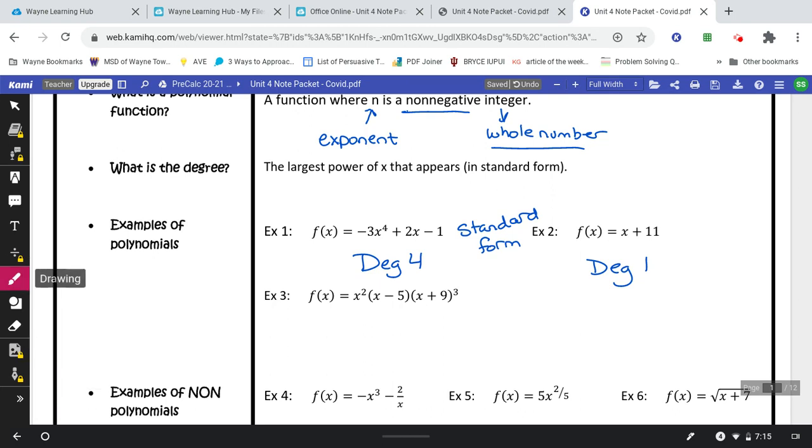Example 3 is what we call factored form, meaning if you needed to, you could multiply all these out. When it's in factored form, we have to count up all the individual little exponents in order to get a grand total. So here you have 2, here there's 1x right there, and here technically there's 3 of these, so we're gonna have 3x's. Add those up for a total of degree 6.